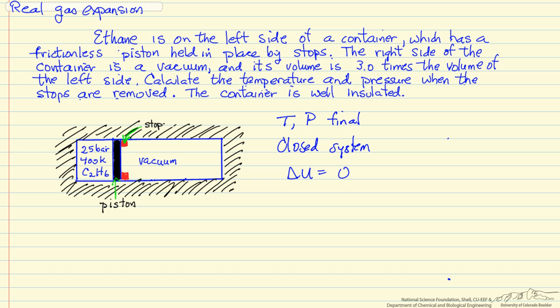Delta U equals Q plus W. There's no work—frictionless piston, weightless, no resisting pressure because of the vacuum—and it's well insulated, so there's no heat. Therefore, delta U is zero.